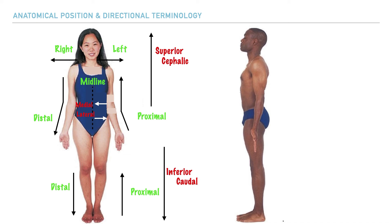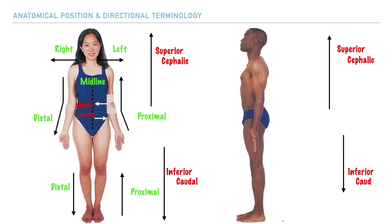Moving over towards the lateral view of anatomical position, we can utilize some of the same terminology we've just discussed. First, let's denote the terms superior and cephalic, along with inferior and caudal. Next, we can also make note regarding the terms proximal and distal.